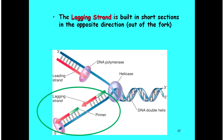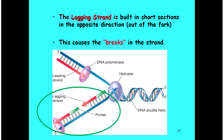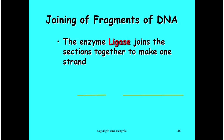The lagging strand, in contrast, has to be built in the direction out of the fork. It starts at the parent strand's 3' end and builds toward the 5' end. Since the parent strands are anti-parallel, this means building out of the fork, requiring backtracking to create more and more short sections. This causes breaks in the strand as we build out, backtrack, build out, and backtrack again. Ligase then joins those sections together to make one continuous strand.